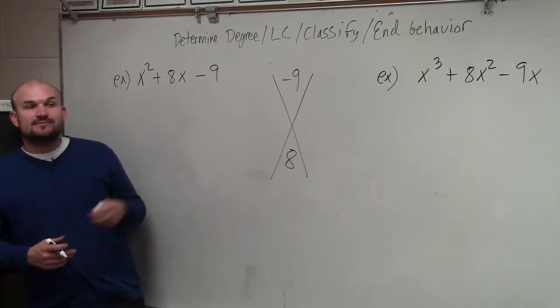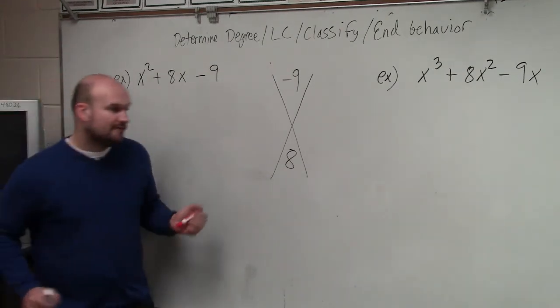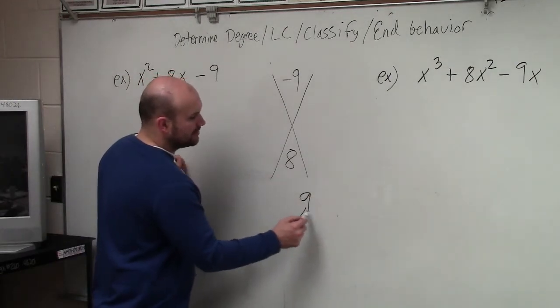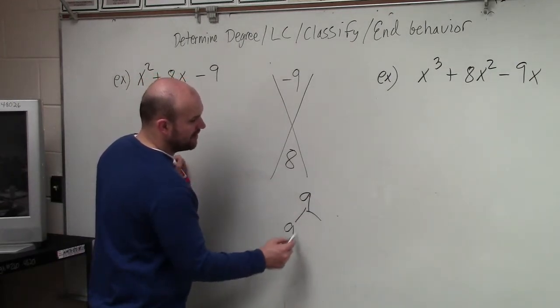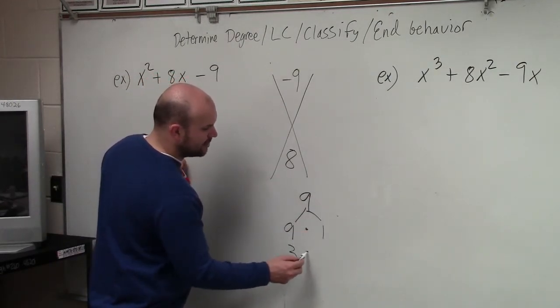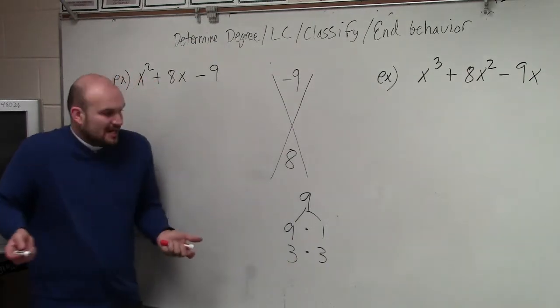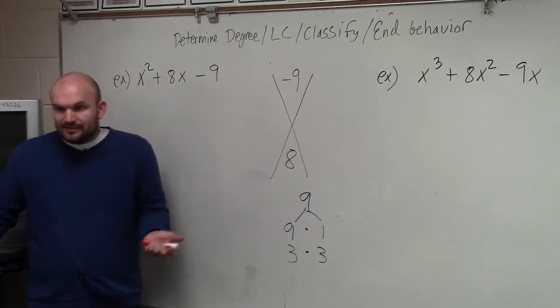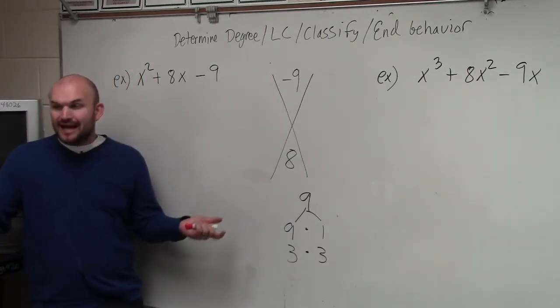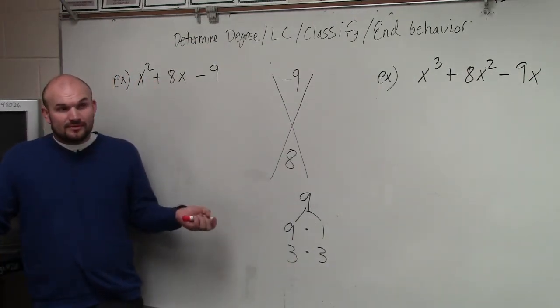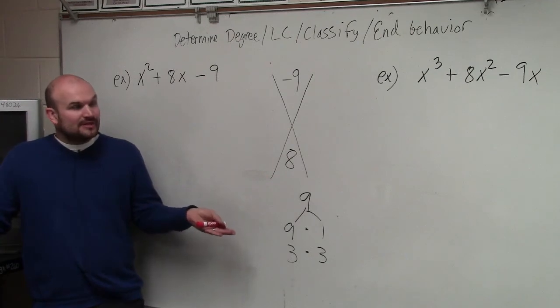Now, I'll give you guys some helpful hints. First thing is, we need to figure out what are the two numbers that multiply to give you 9. Well, guys, there's only two possibilities — it's only 9 and 1, and 3 and 3. That's it, that's all you got. That's all we have to work with, only those two opportunities.